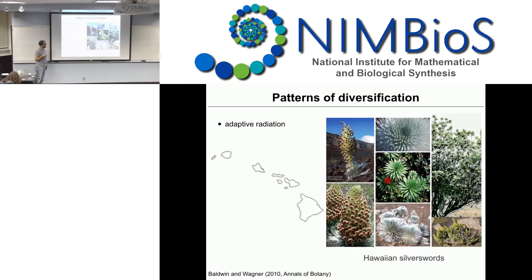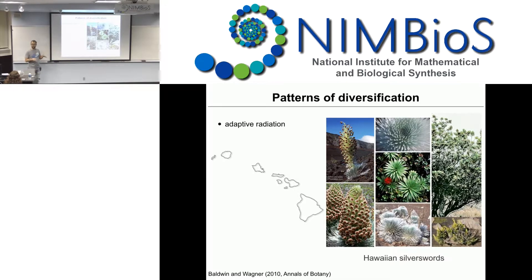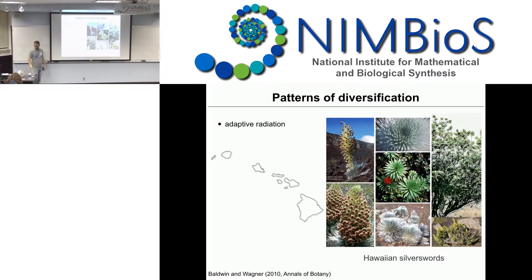The motivation I always put out for diversification rate estimation is that there are quite a lot of different patterns — for example, the adaptive radiation of Hawaiian silverswords, which originally came from the West Coast, colonized Hawaii, and started rapidly diversifying. If we build a time-calibrated phylogeny of this, we can see quite well that there was a rapid radiation.